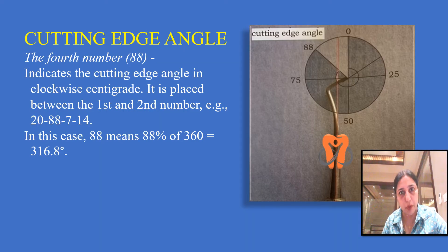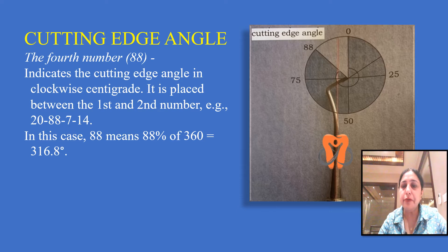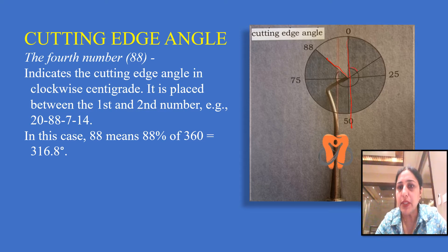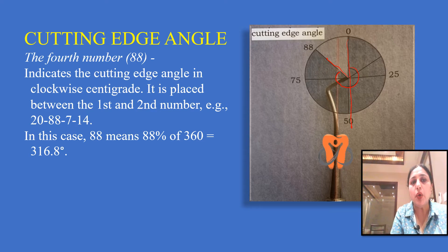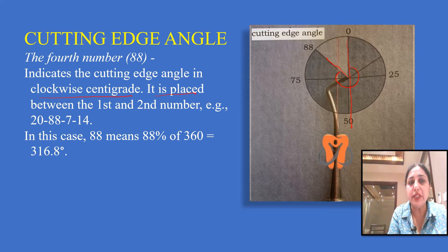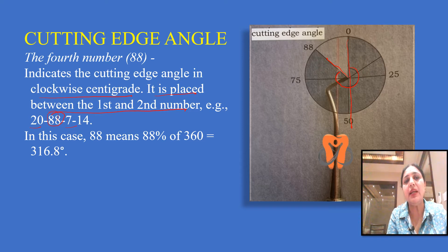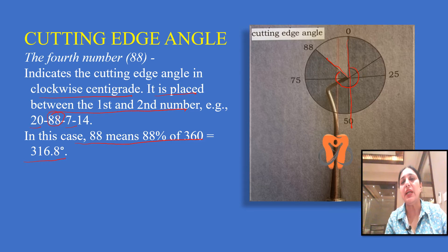The fourth number represents the cutting edge angle, and this comes into picture when the cutting edge is at an angle other than 90 degrees. The cutting edge angle is the angle made by the cutting edge with the long axis of the handle. In this case the cutting edge angle turns out to be 88 degrees, also represented in clockwise centigrade. When the fourth number is present, it is placed between the first and the second number in the formula. So our formula was 20, 7, and 14. The 88 will now be placed between 20 and 7, making the formula 20, 88, 7, and 14. Here 88 means 88% of 360, which is 306.8 degrees.